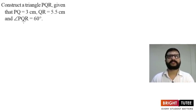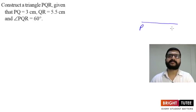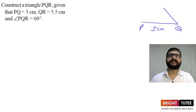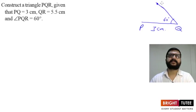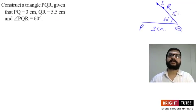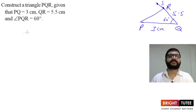First of all we have to draw a rough sketch. We need PQ to be 3 centimeters, and angle PQR is 60 degrees — so this angle here is 60 degrees. We construct a 60 degree angle at Q; let's say it is QS. Then we need QR to be 5.5 centimeters, so we take a point R on QS at 5.5 centimeters and join R and P. This is the rough sketch of the triangle we are going to construct.